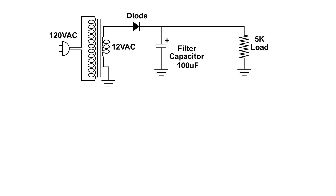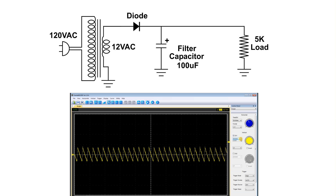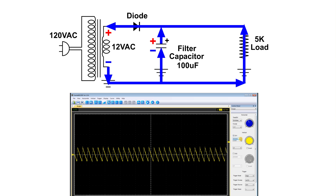Now I have added a 100 microfarad electrolytic capacitor, and notice that the top plate is marked positive — that means this is a polarized capacitor. Let's take a look at what the oscilloscope looks like across the load resistor, and here we have a sawtooth wave.